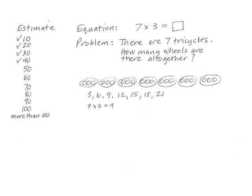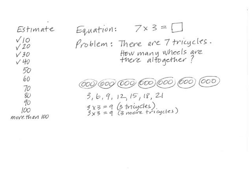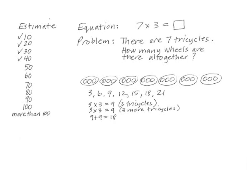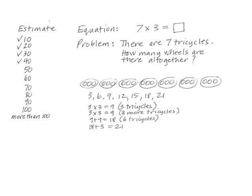Ruthie had a different way of figuring out the answer. She began, I know three times three is nine. I recorded, not sure where Ruthie was going. Then she added, and that's three tricycles. I recorded, and Ruth continued. She said, three times three again is three more tricycles, and I recorded. And she continued, nine plus nine is eighteen. So that's six tricycles, but we need one more tricycle, so we have to add three more wheels. I recorded 18 + 3 = 21, and I said, so we figured out the answer of twenty-one another way.